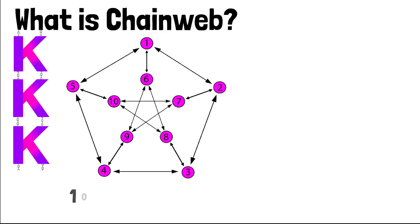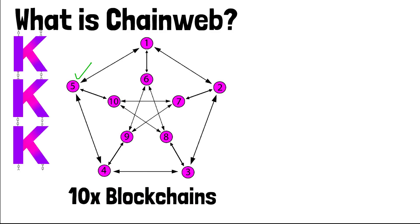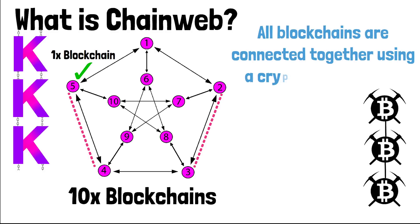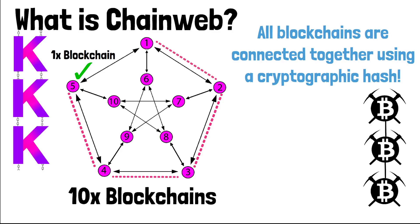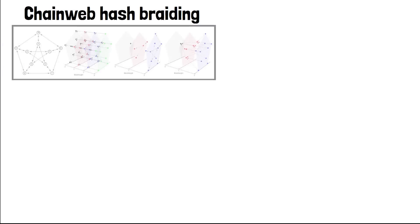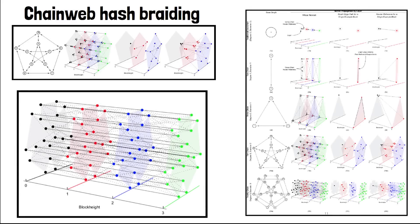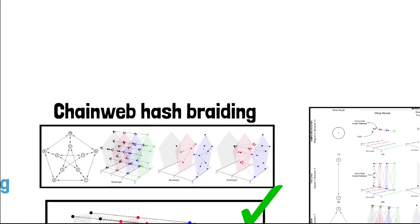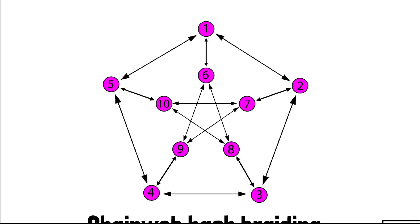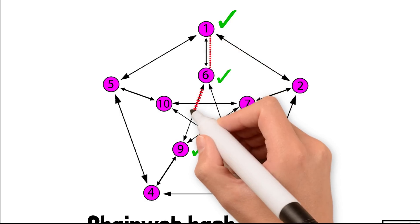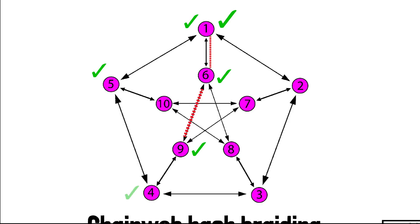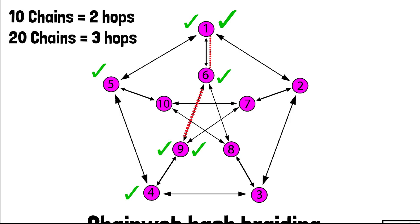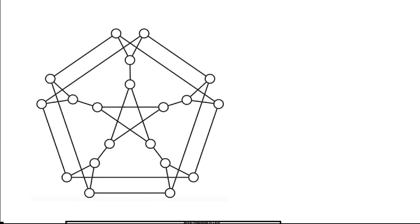ChainWeb is the Kadena blockchain. When Kadena first launched, they launched with 10 chains all connected together. Each chain is represented like a dot on a diagram — all connected together just like blocks on a Bitcoin blockchain, using a cryptographic hash. Kadena connects multiple blockchains together using this same technique, called hash braiding. The chains are braided in a special pattern where the farthest chain is no more than three hops away from any other chain.